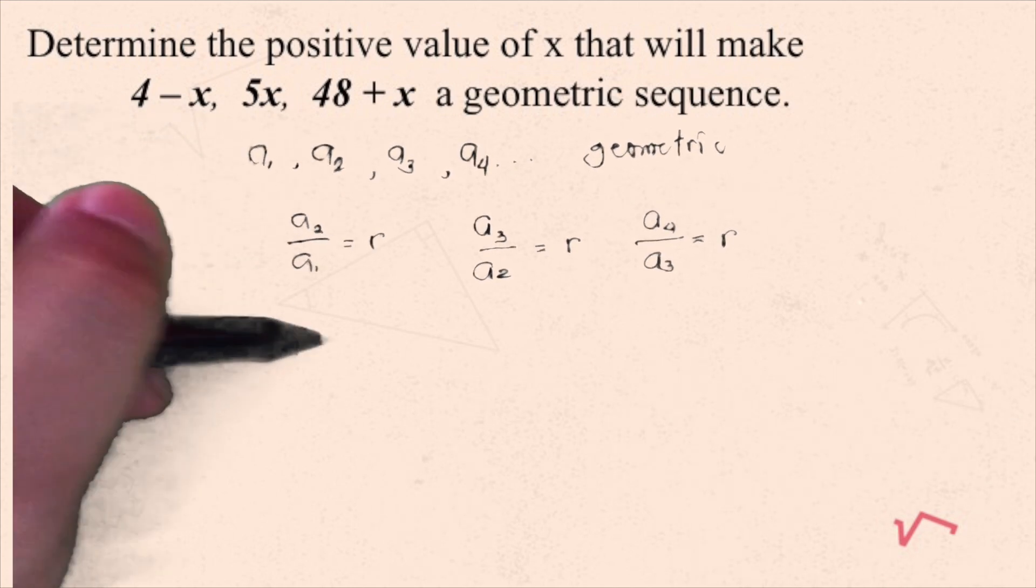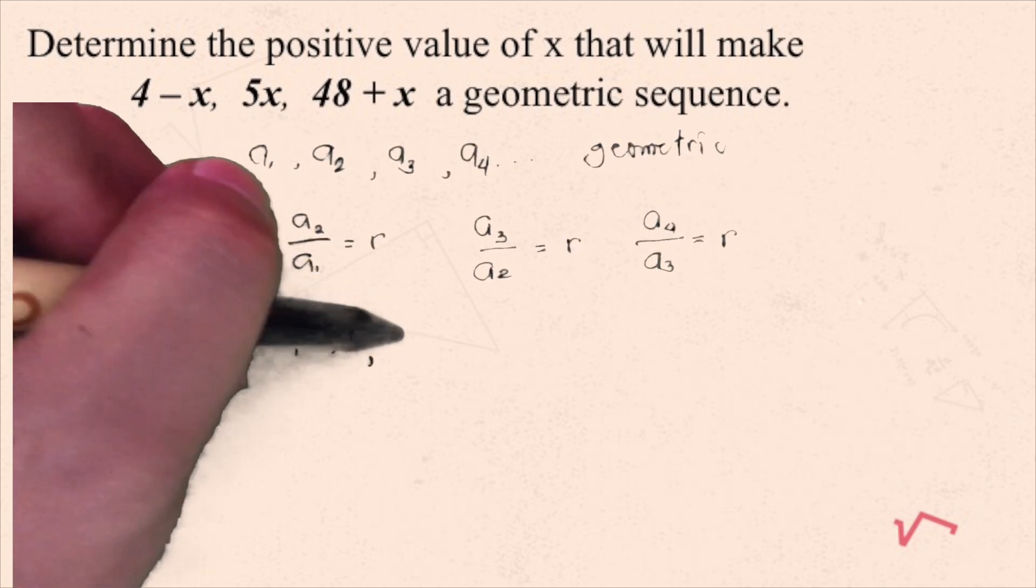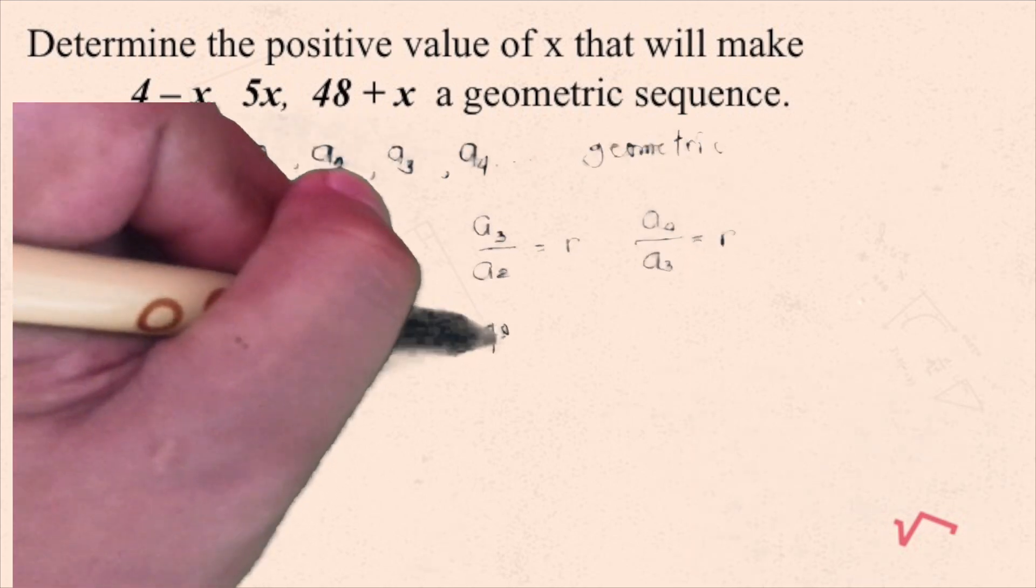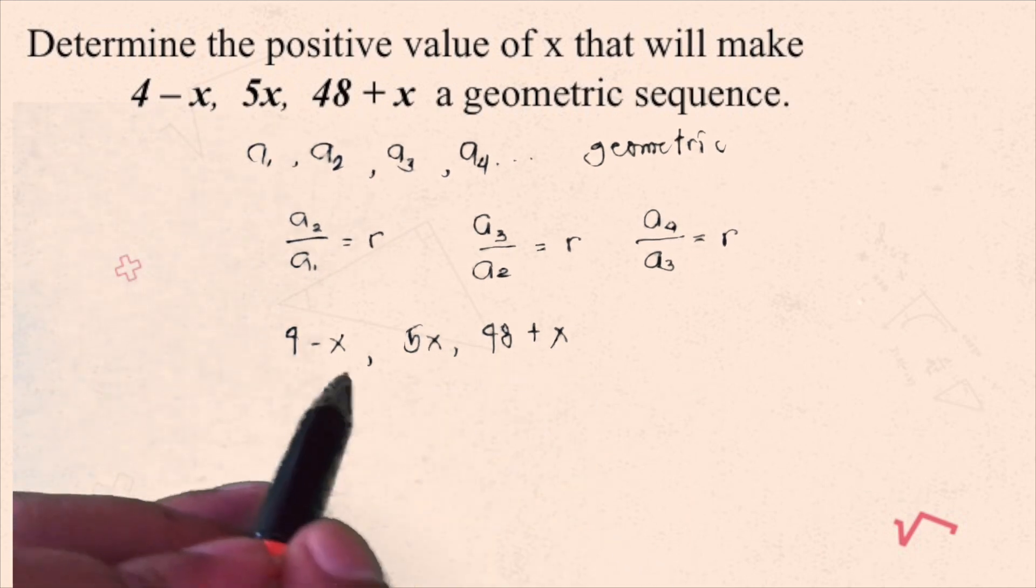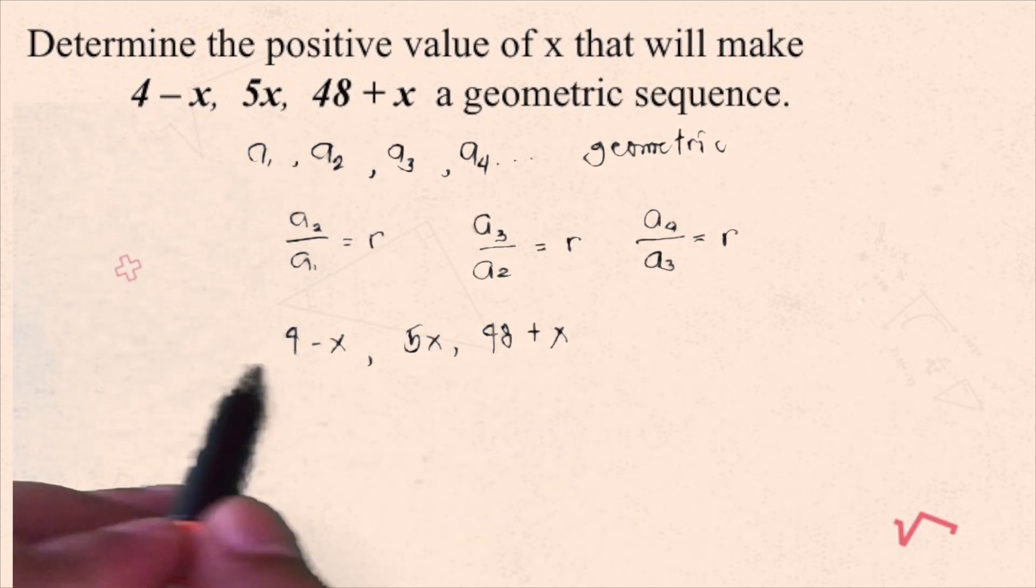Now, the given is 4 minus x, then 5x, and 48 plus x. Here, we will solve for x that will make this one geometric.